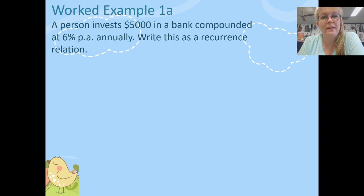We're going to take you through some worked examples now. This first worked example uses the same figures for four different parts. A person invests $5,000 in a bank. It's compounded at 6% annually. Write this as a recurring relation. Now it says 6% per annum. That means it's compounded once a year. So our compounding period is 1.